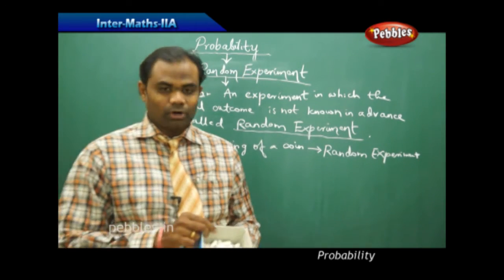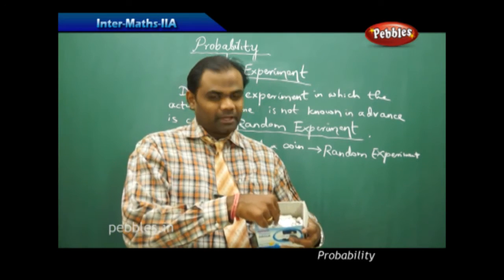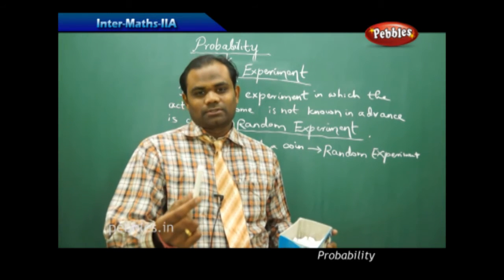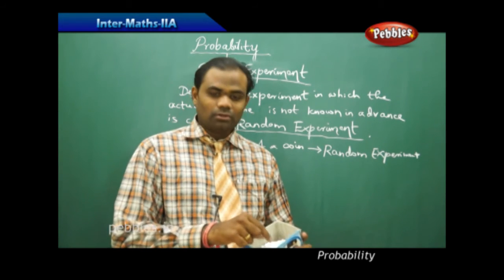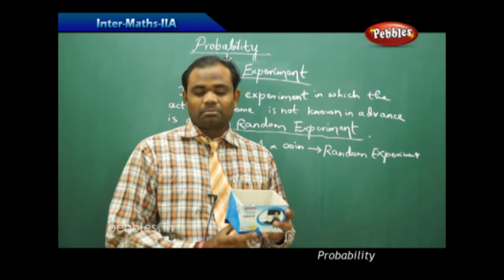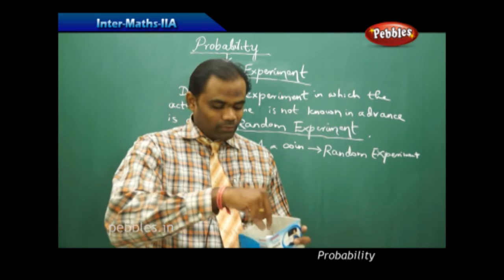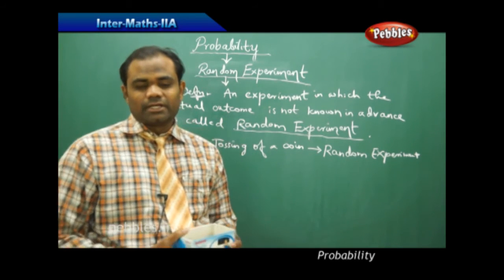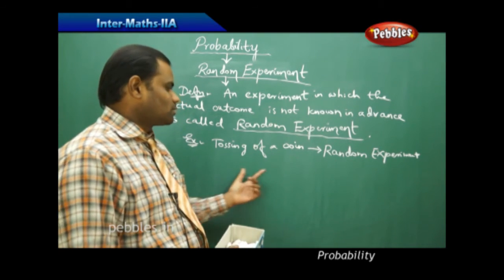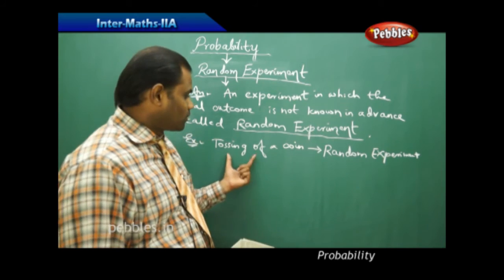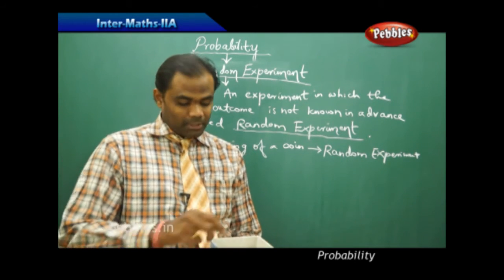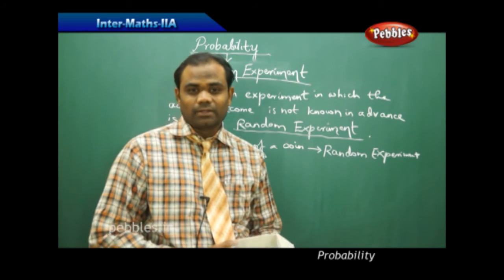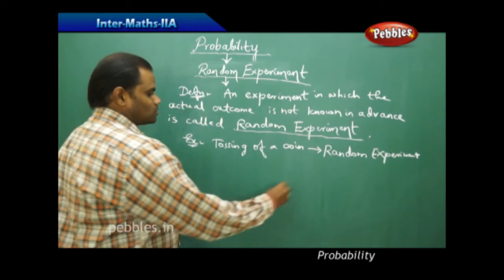For contrast, if I take a box of chalk pieces and pick one, every time the outcome is known in advance — I am going to pick a chalk piece because all things inside the box are chalk pieces. So picking a chalk piece from the box is not a random experiment because the outcome is known in advance. In tossing of a coin we don't know things in advance, so it is a random experiment, whereas picking a chalk piece from a box of only chalk pieces is not a random experiment.